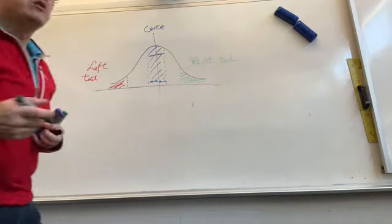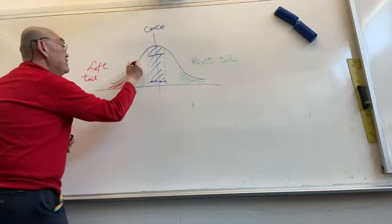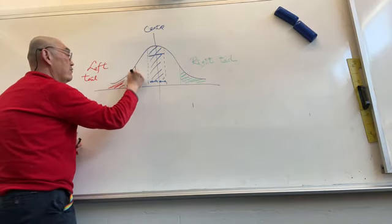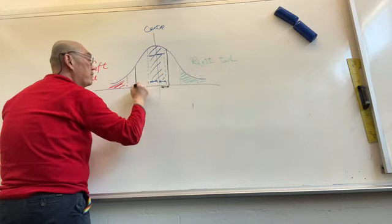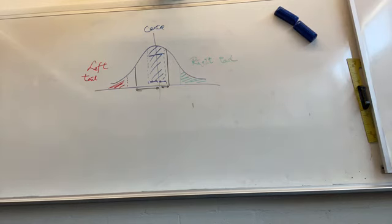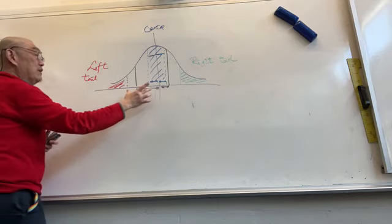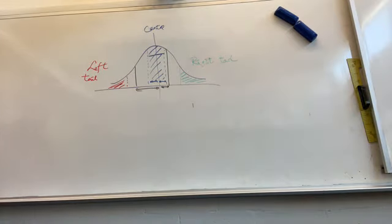There's also a fourth situation: the shaded region is between two bounds that are not symmetric about the mean — one side is longer than the other. So you need to know: left tail, right tail, center, and the asymmetric case.